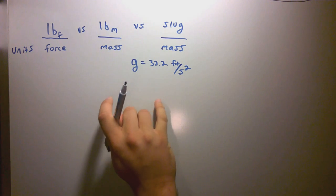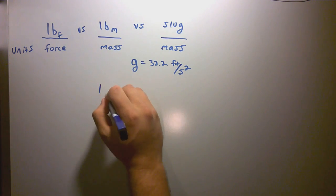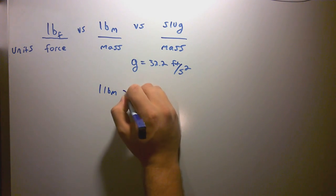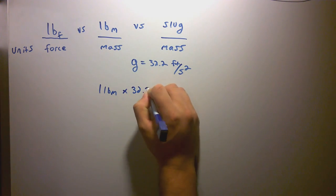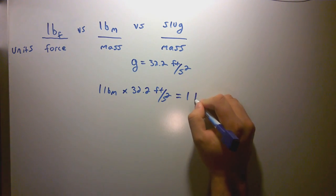So you're probably thinking, hey, which one's bigger? Well, one pound mass, I'm sorry, times 32.2 feet per second squared is equal to one pound force.